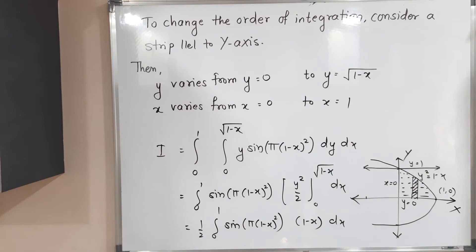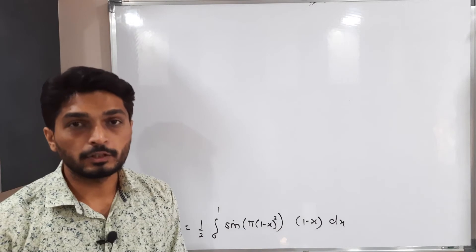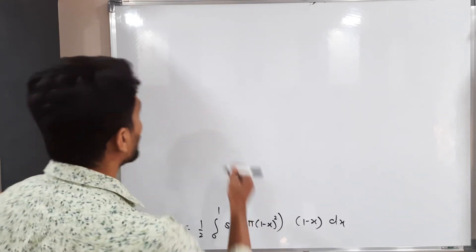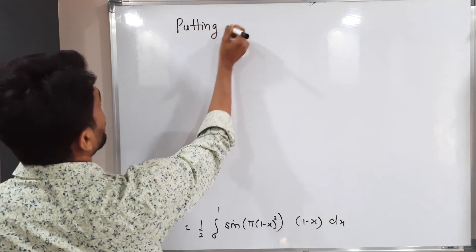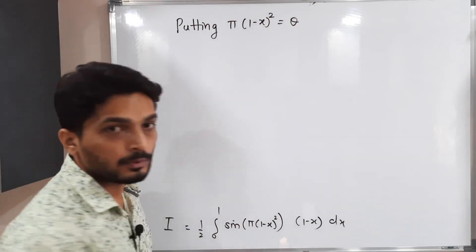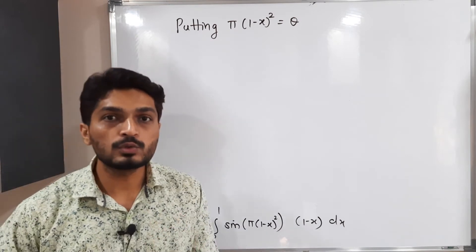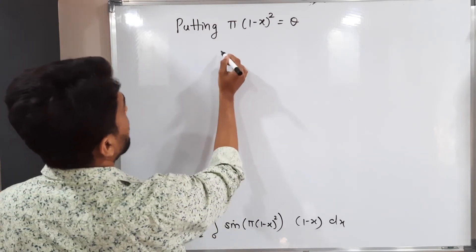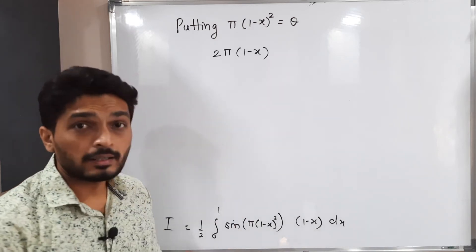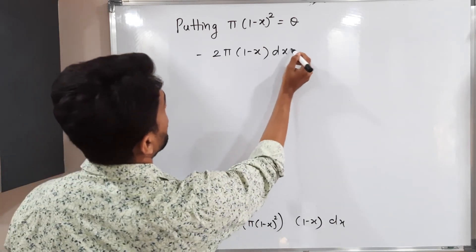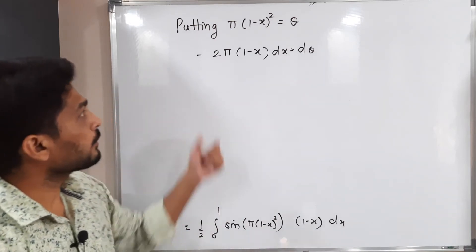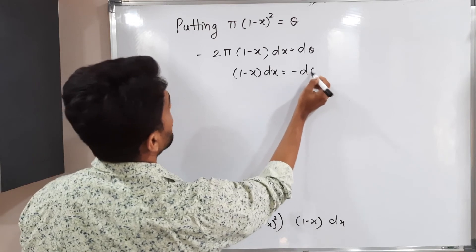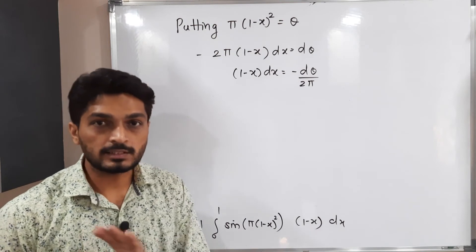We cannot solve this integration directly — a substitution is needed since the angle of the sine is complicated. Let θ = π(1 − X)². Differentiating: dθ = π · 2(1 − X) · (−1) dX = −2π(1 − X) dX. Therefore, (1 − X) dX = −dθ / (2π). This completes the first task. Now we change the limits: when X = 0, θ = π; when X = 1, θ = 0.